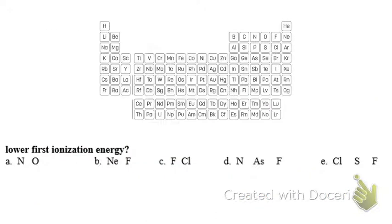Let's put it into practice. Which has the lower first ionization energy? I'm looking for lower ionization energy, so I want it to be farther from He. In this case it's nitrogen, then fluorine, chlorine, arsenic. I'll leave the last one for you — you can probably answer it just as quickly; just circle one last element.